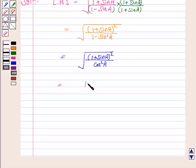This is equal to 1 plus sine A upon cos A. Root gets cancelled with the square.